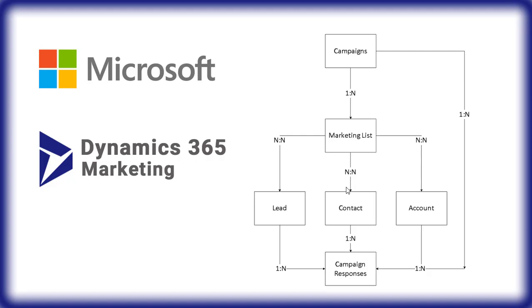This is the diagram which shows the life cycle of the marketing module in Dynamics 365. These are the entities we have in the marketing module: Campaign, Marketing List, Lead, Contact, Account, and Campaign Response. In between entities we have relationships, which are marked here.